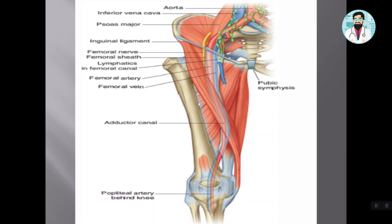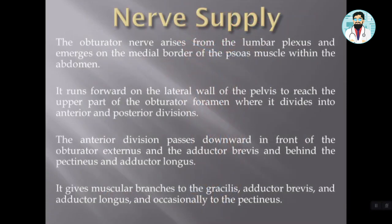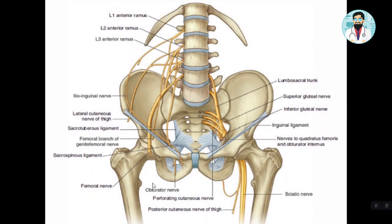When we talk about the nerve supply, we know that the nerve supply to the medial compartment is the obturator nerve. The obturator nerve enters the lower limb through the obturator foramen and divides into an anterior division and a posterior division — a medial and lateral branch.